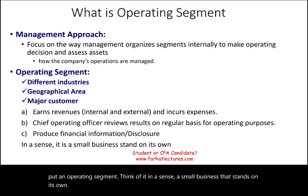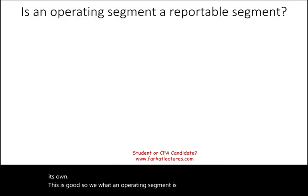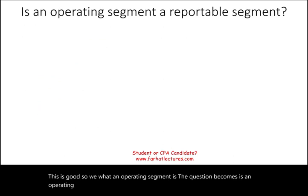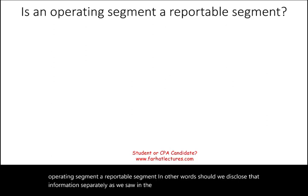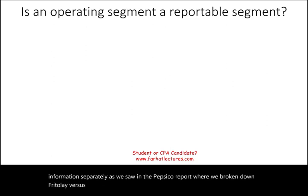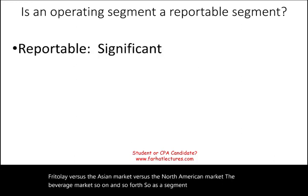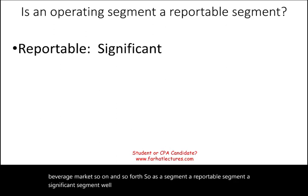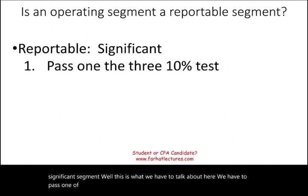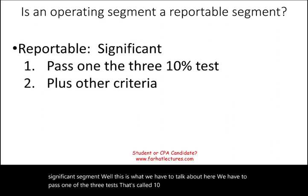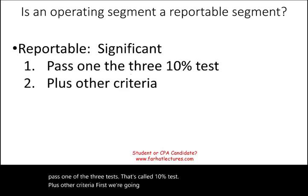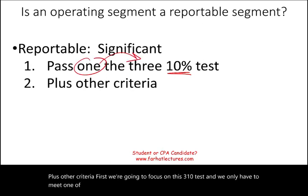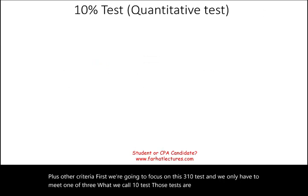Now we know what an operating segment is. The question becomes: is an operating segment a reportable segment? In other words, should we disclose that information separately — as we saw in the PepsiCo report where Frito-Lay, the Asian market, North American market, and beverage market were each broken out? Is it a significant segment? To qualify, a segment must pass one of three tests called the 10% tests, plus other criteria.